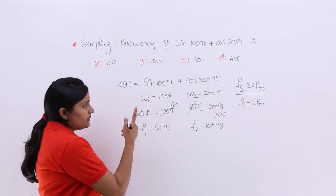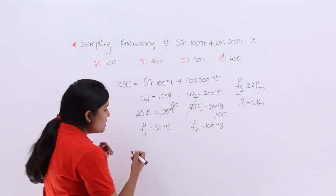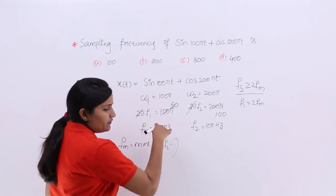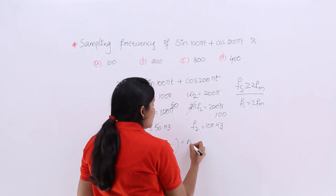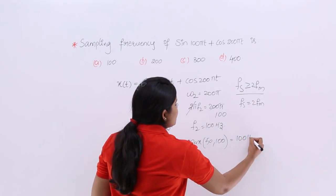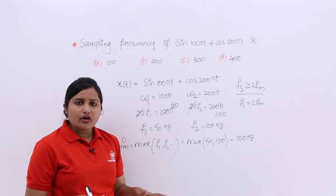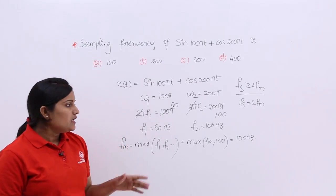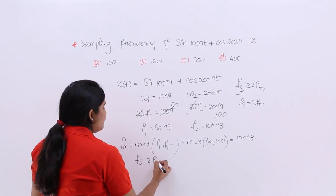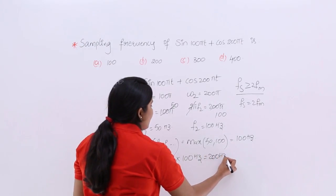Now you can calculate fm. The message frequency component is the maximum frequency component in the combination of frequency components in the message. So fm = maximum of (f1, f2) = maximum of (50, 100) = 100 Hz. This will become the message frequency. Now, substituting into fs = 2fm, we get fs = 2 × 100 = 200 Hz.